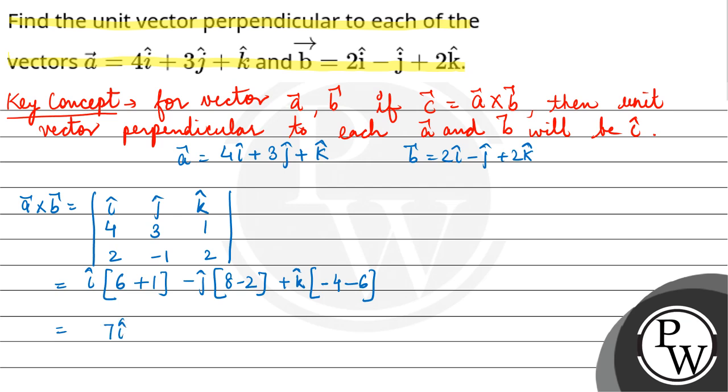So it would be 7i - 6j - 10k. This equals a cross b. We assume this is c vector.